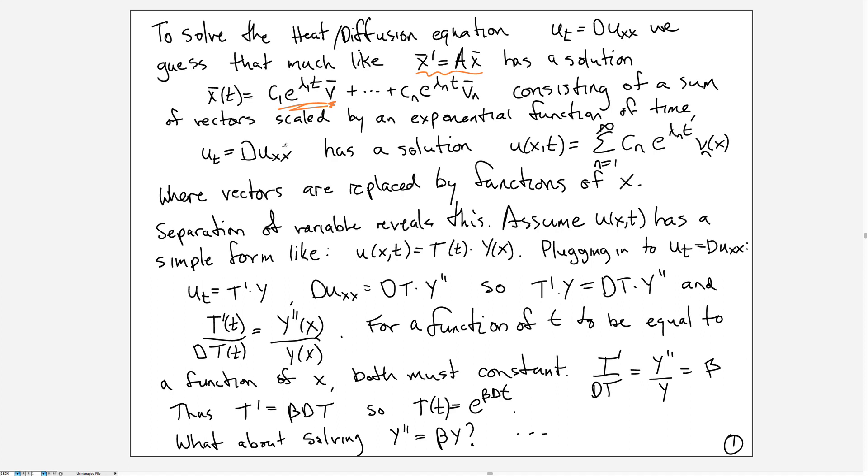Here we're going to do something similar, except now the sum is different. Instead of adding up vectors, we're adding up functions. We have an infinite sum with arbitrary constants multiplying e^(λt), where λ is an eigenvalue now of a derivative operator instead of a matrix operator. Finally, instead of vectors, we have eigenfunctions that we're going to be adding up.